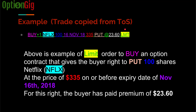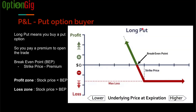Now let's look at the profit and loss diagram of a put option buyer. Long put means you're buying a put option. When you bought a put option, you paid a premium for it. So your breakeven point is the strike price — in this example, $335 — minus the amount of premium paid, which is $23.60. So your breakeven point is $335 minus $23.60, meaning the stock has to fall below this breakeven point for the trade to be profitable.